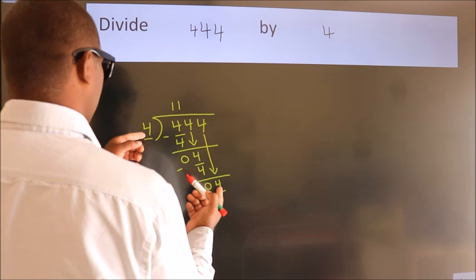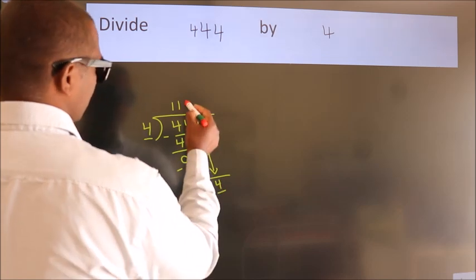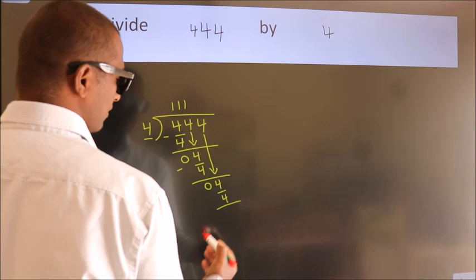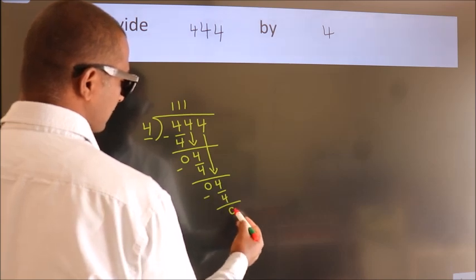When do we get 4? In 4 table. 4 once, 4. Now, we subtract. We get 0.